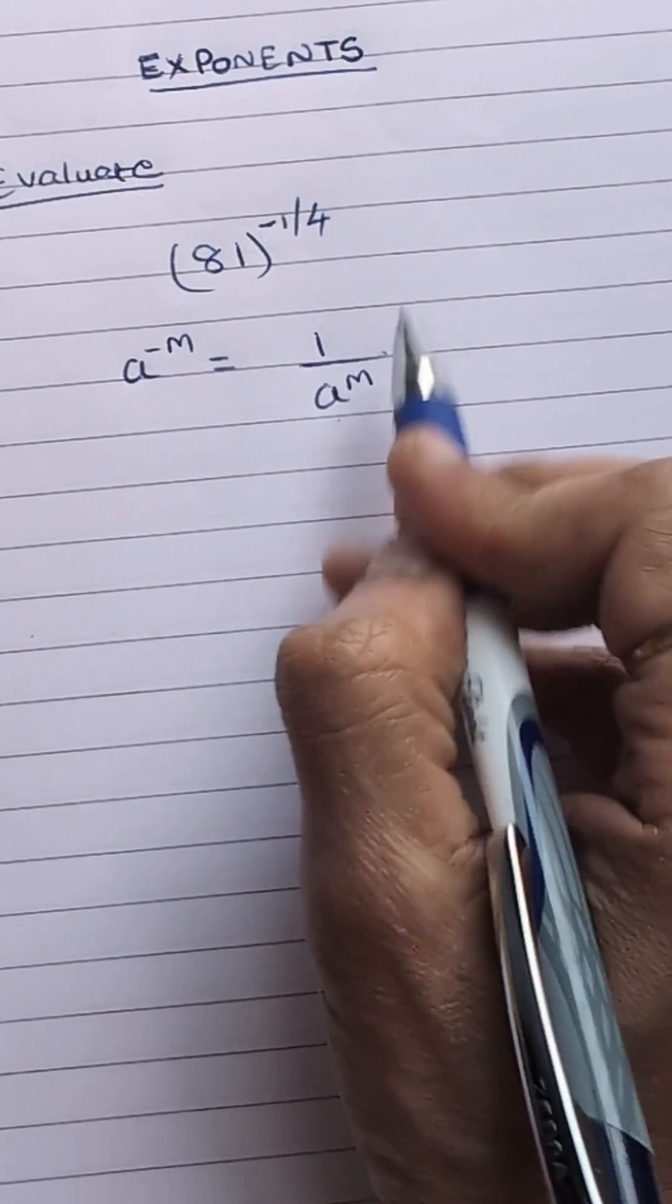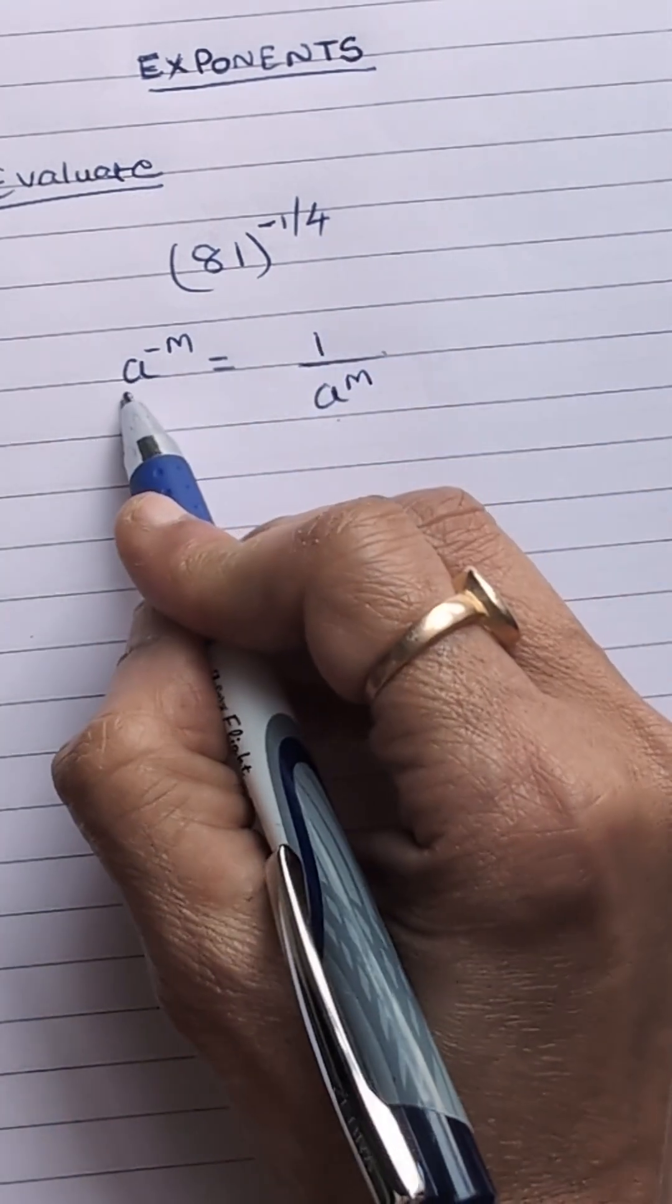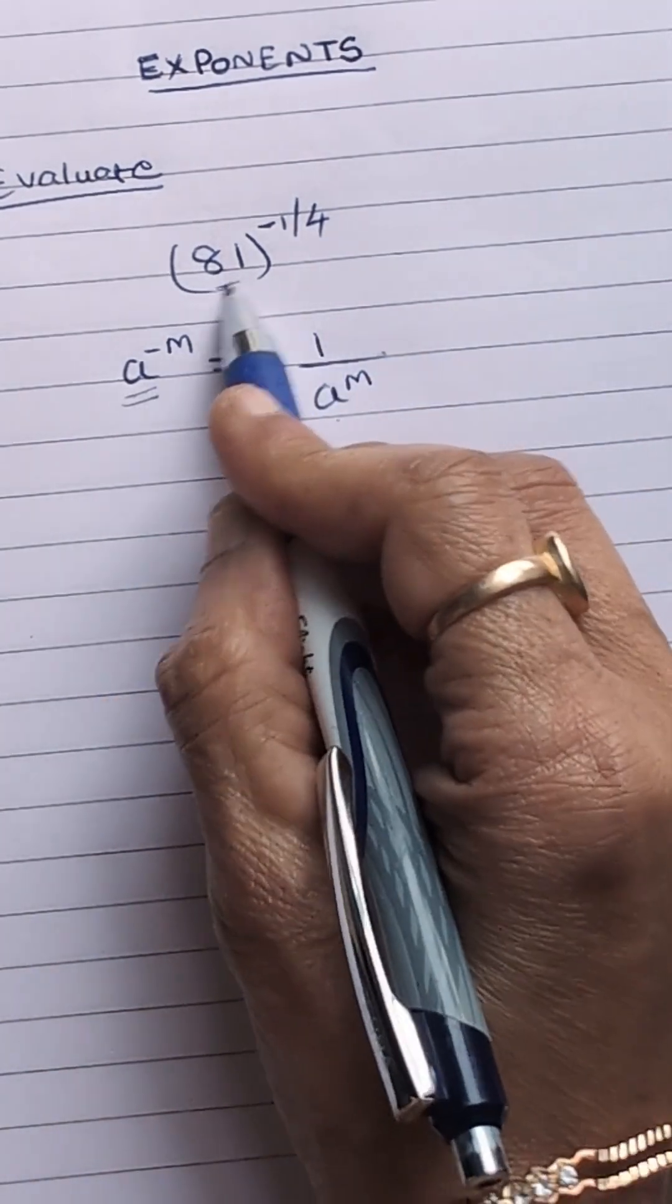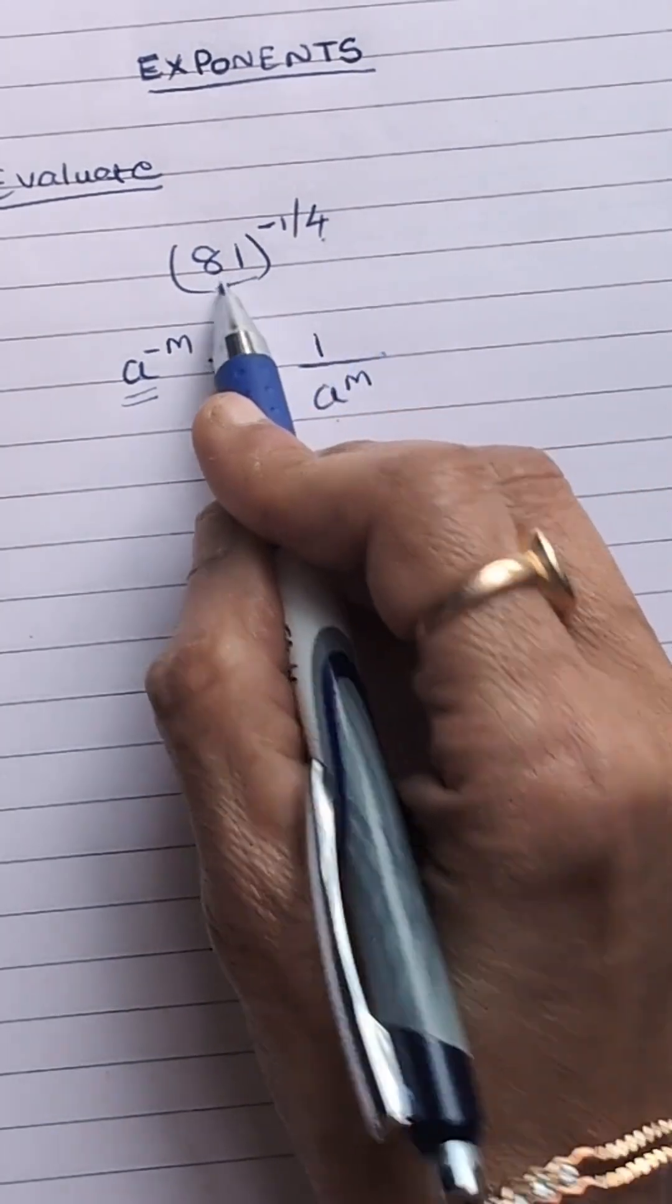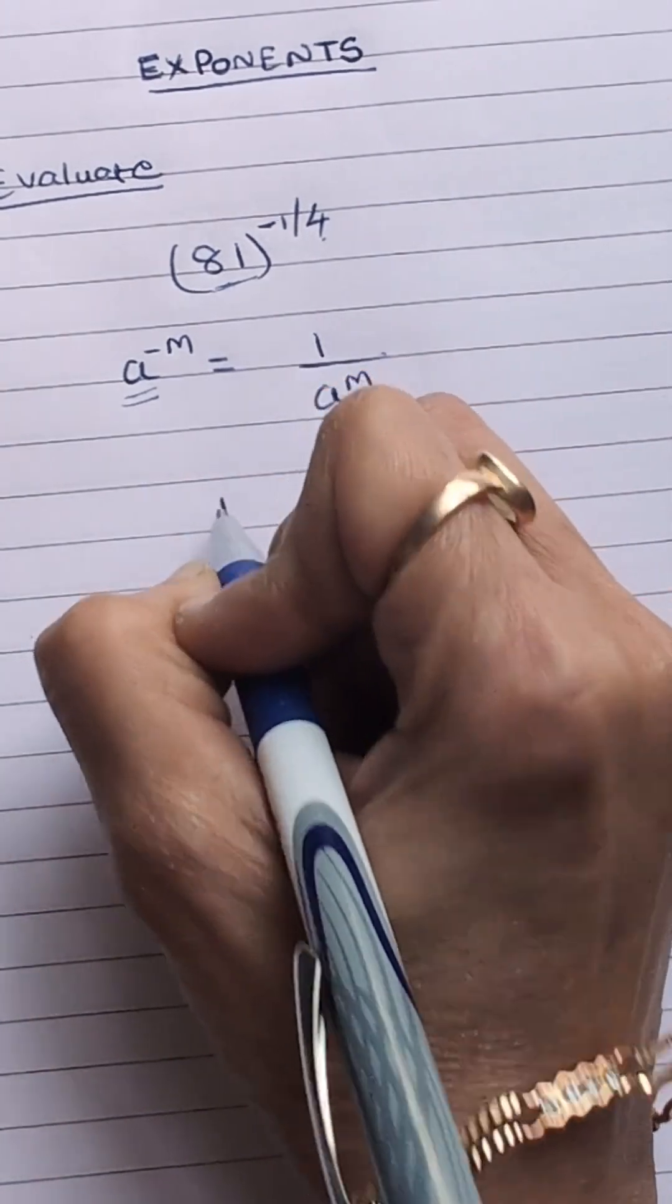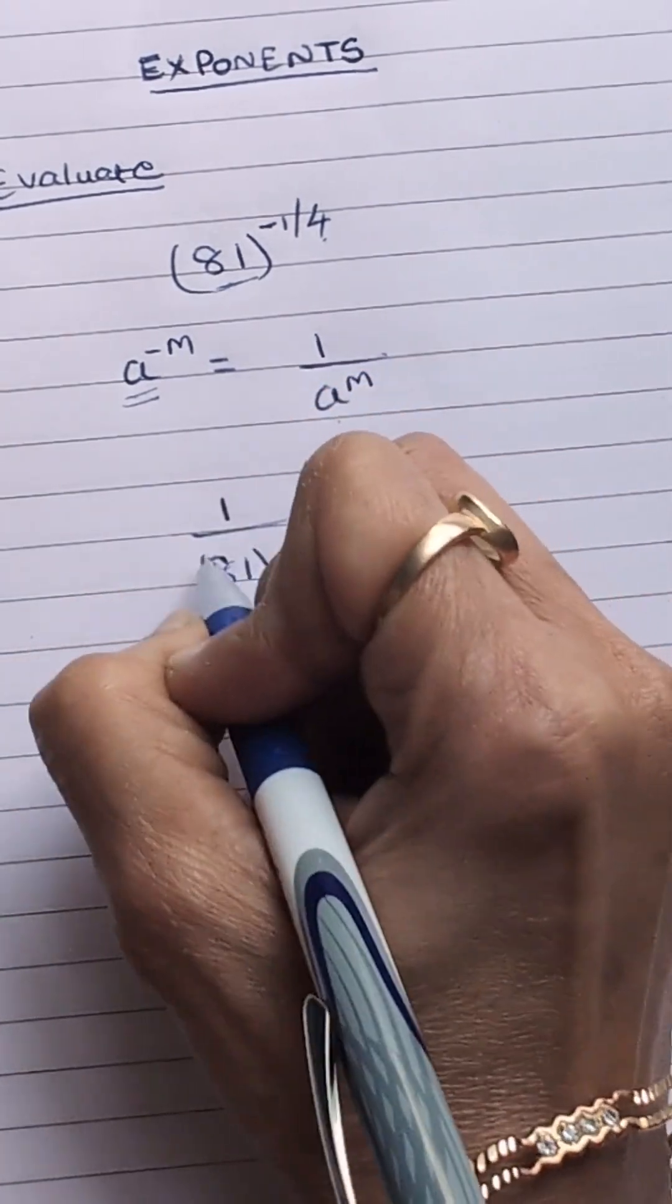That means we have to take the reciprocal of the base. This is the base. So to make the power positive, we have to take the reciprocal of the base. So 81 to the power minus 1 upon 4 can be written as 1 upon 81 to the power 1 upon 4.